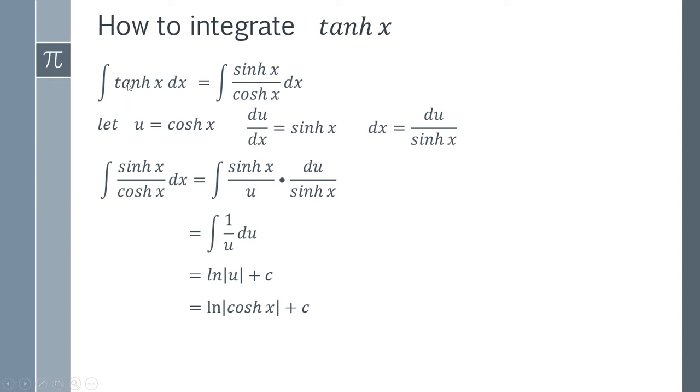So the integral of your hyperbolic tangent is simply your natural logarithm of cosh x plus c. And we've got these absolute values, because you can't take the natural logarithm of a negative number. And so we've now got our final answer. Hopefully this video was helpful to you. Thank you very much for watching.